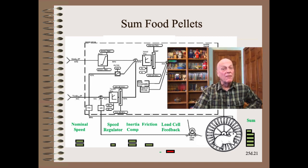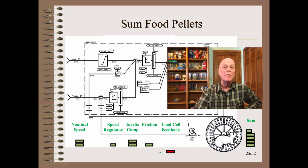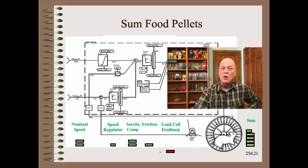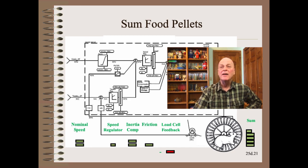So, our very, very smart squirrel does the final tally and finds that for this moment in time he needs 4 and 3 quarters pellets to do the best job of controlling tension, with only a small amount coming from the load cell itself. Our very, very smart squirrel must repeat calculations like this 10 to 10,000 times per second to keep up with changing circumstances. But this is no problem because our squirrel is very, very smart.